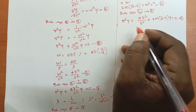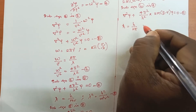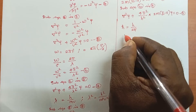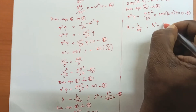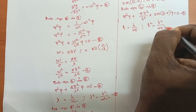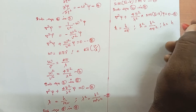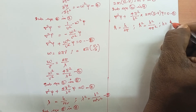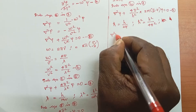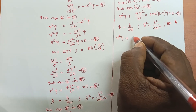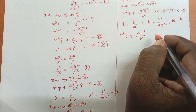We can also write this using ℏ (h-bar), where ℏ = h/2π, so ℏ² = h²/4π², meaning h² = 4π²ℏ². Substituting into equation 11: ∇²ψ + (4π²/4π²ℏ²) · 2m(E − V)ψ = 0.